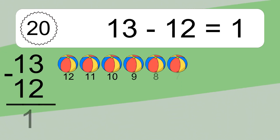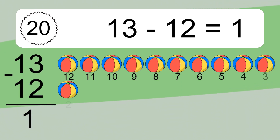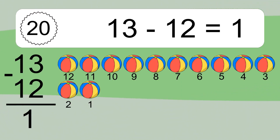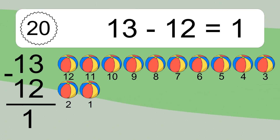13 minus 12 equals what? 13 minus 12 equals 1. Let's count it. 12, 11, 10, 9, 8, 7.